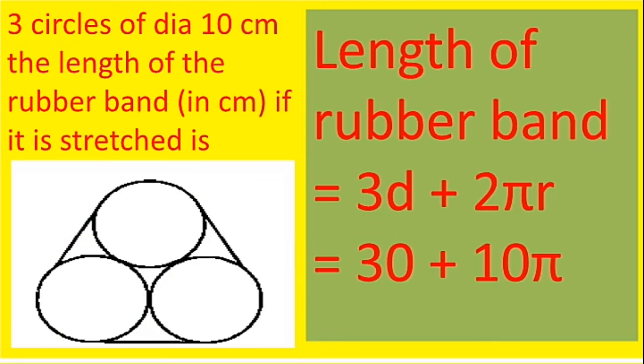what we can do is, just the length of the rubber band will be 3D plus 2 pi r. Why 3D? Because once you observe clearly the diagram, you can understand how 3D has come, right?